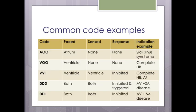Common pacemaker modes include AOO — atrium paced, nothing sensed, no response — an asynchronous mode used in sick sinus syndrome. VOO paces the ventricle asynchronously with no sensing, used in complete heart block. Using AOO in complete heart block would fail to transmit paced electricity to the ventricle, resulting in no cardiac output. VVI is ventricle paced, ventricle sensed, with inhibition response.